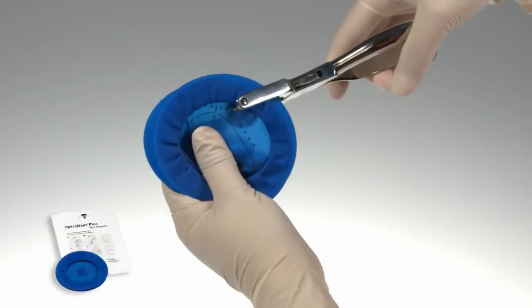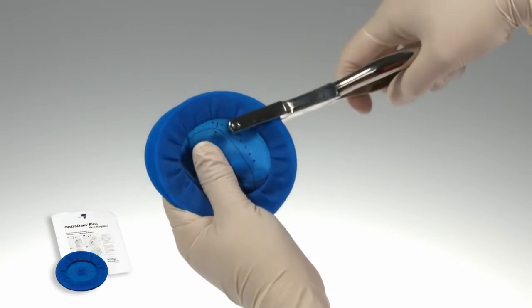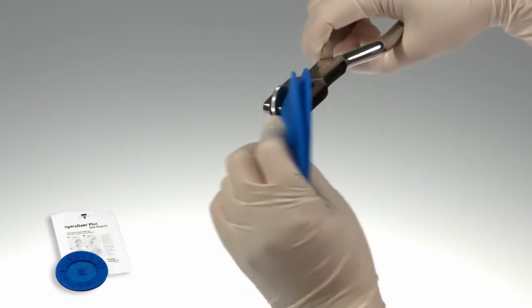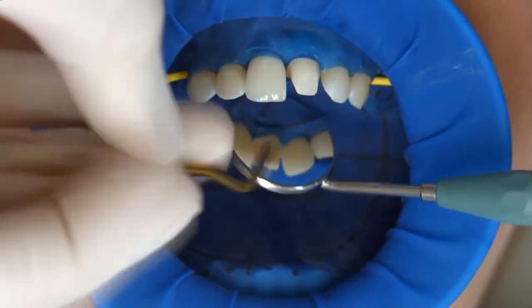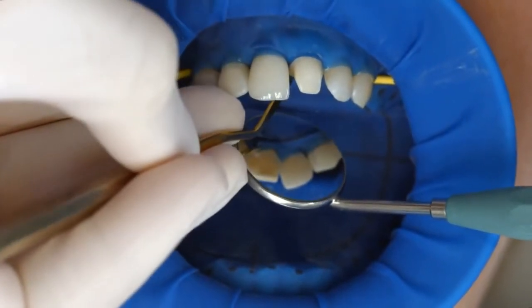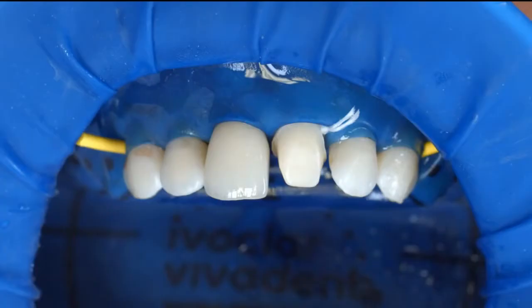When an adhesive luting protocol with composites is used, reliable isolation of the operating field is indispensable. Preferably place an anatomically shaped rubber dam such as the Optradam, or alternatively use cotton rolls and a saliva ejector.